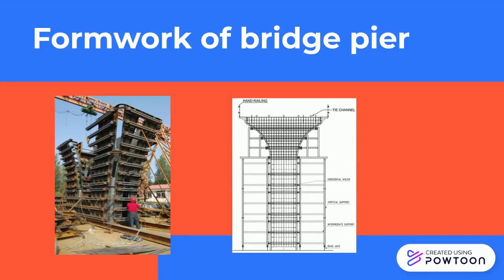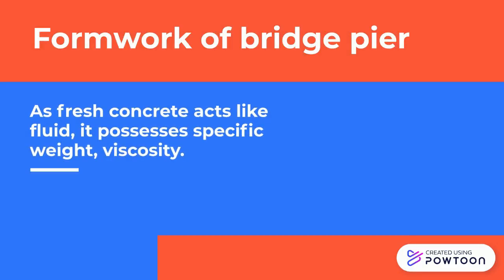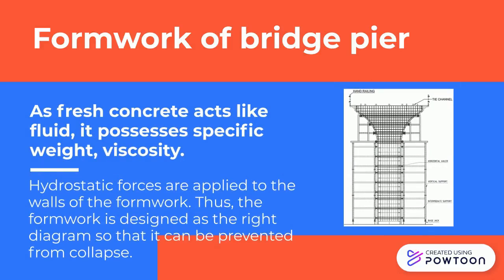And these are the formwork of bridge pier. As fresh concrete acts like fluid, it possesses specific weight and viscosity. Therefore, hydrostatic forces are applied to the walls of the formwork. Thus, the formwork is designed as shown in the right diagram so that it can be prevented from collapse.